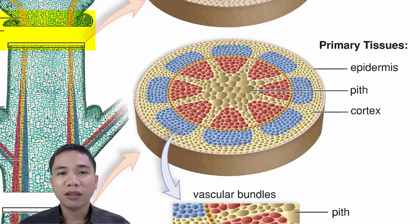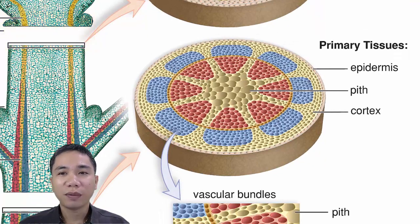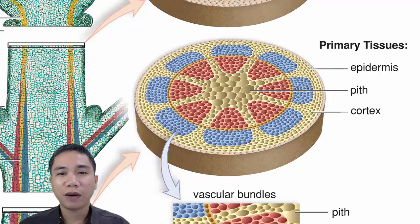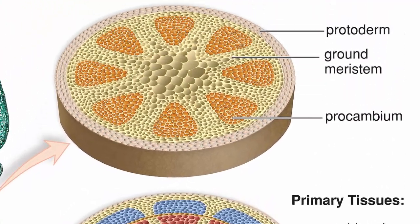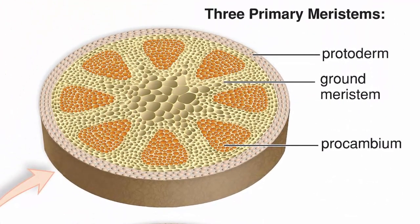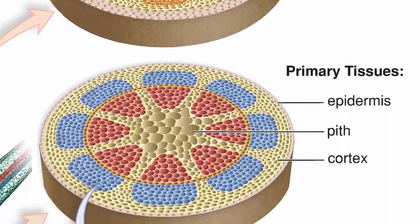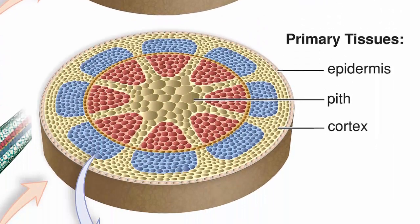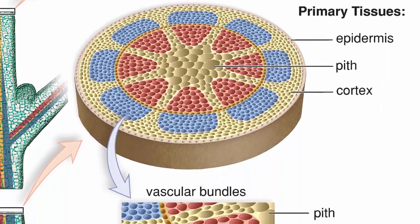As cells move away from the tips, they start to differentiate and begin performing specific functions. These three primary meristematic tissues will eventually give rise to the primary dermal, ground, and vascular tissues.